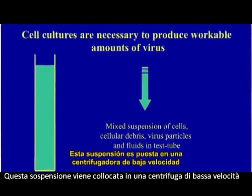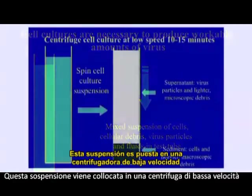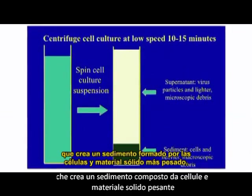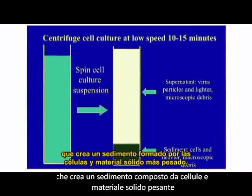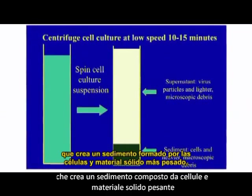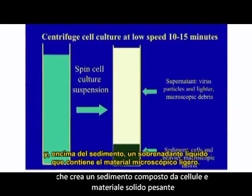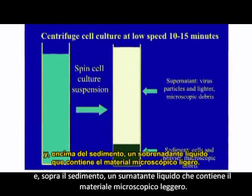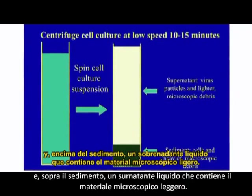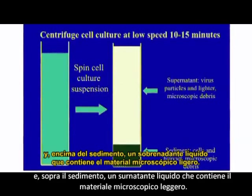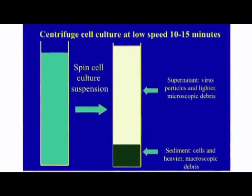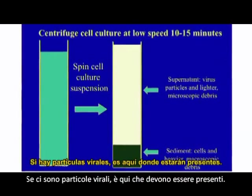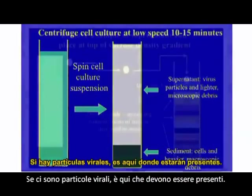This suspension is spun in a low-speed centrifuge which creates a sediment consisting of the cells and heavier solid material, and above the sediment, a liquid supernatant containing the much lighter microscopic material. If retroviral particles are present, this is where they will be distributed.